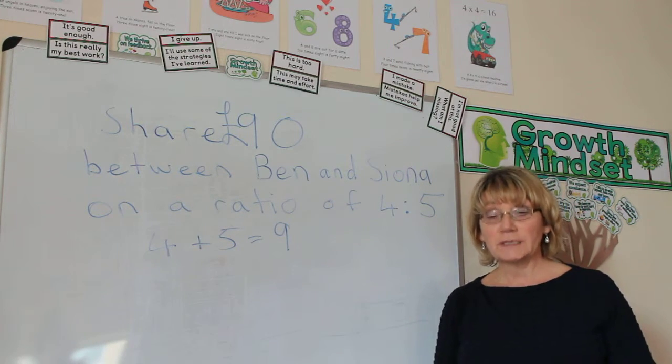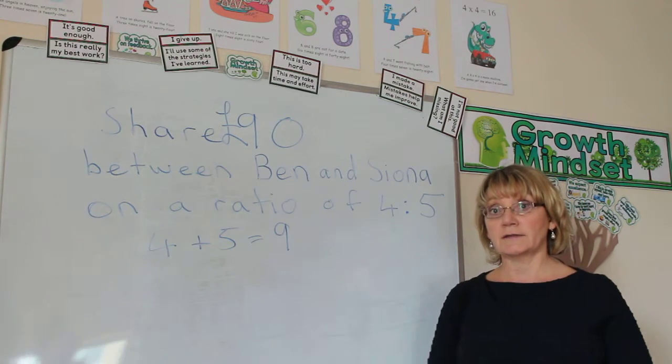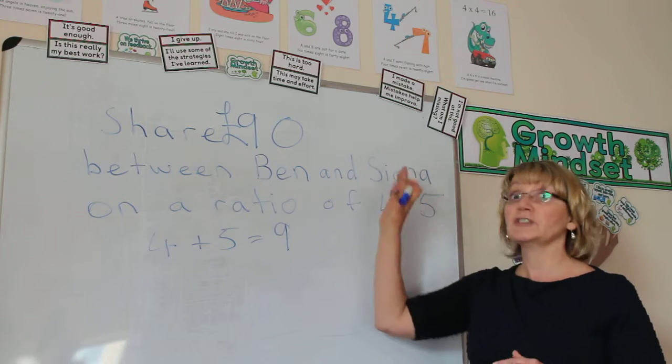Step 2, divide the biggest number in the question by the answer to the added together ratios. Well, the biggest number in this question is the £90.